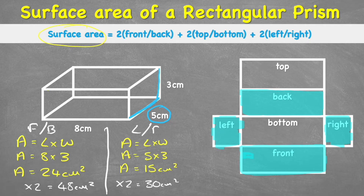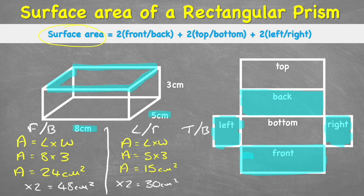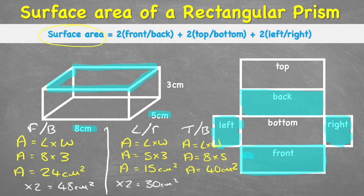Now we just have top and bottom left to go. Looking at the top face, we use eight centimeters and five centimeters. Area equals length times width, so area equals eight times five, therefore area equals 40 centimeters squared. Multiplying by two for top and bottom gives us 80 centimeters squared.